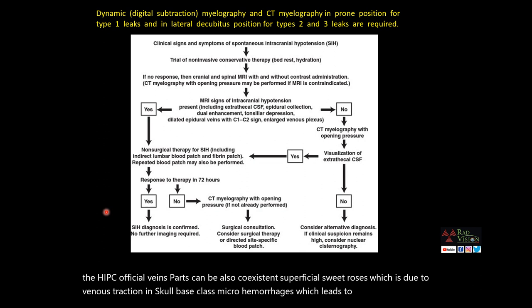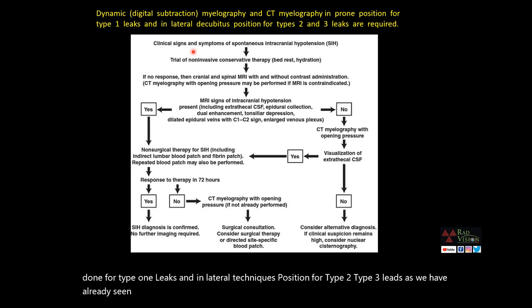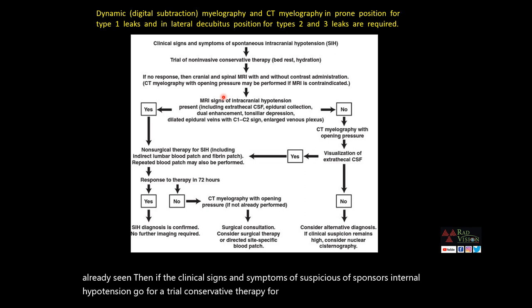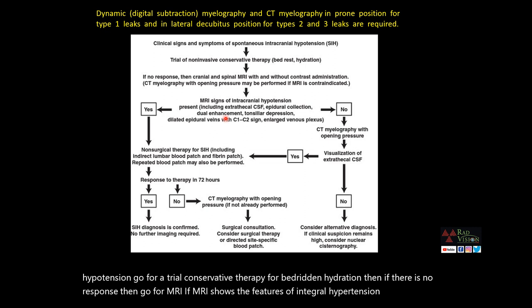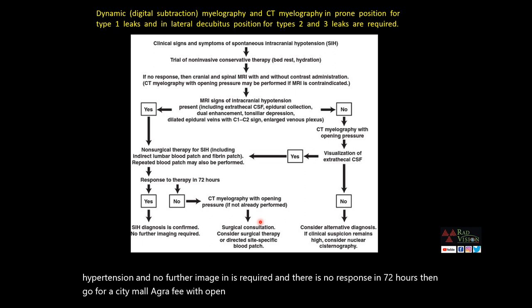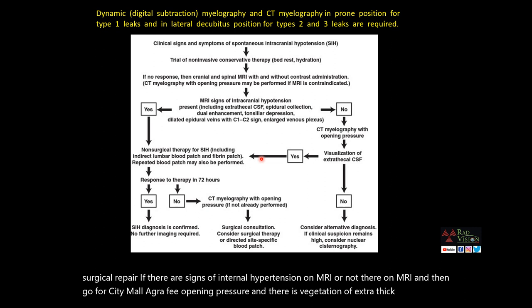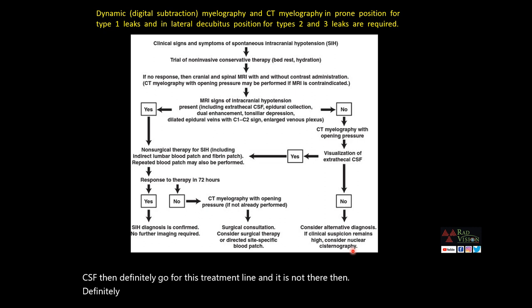Dynamic digital subtraction myelography and C2 myelography in prone position should be done for type 1 leaks, and in lateral decubitus position for type 2 and type 3 leaks. If clinical signs and symptoms are suspicious of SIH, start with conservative therapy — bed rest and hydration. If no response, then proceed to MRI. If MRI shows features of intracranial hypotension with high BERN score, go for epidural blood patch and fibrin patch. If there is response within 72 hours, it is confirmed SIH and no further imaging is required. If no response in 72 hours, proceed to CT myelography with opening pressure and then consider surgical consultation and repair.